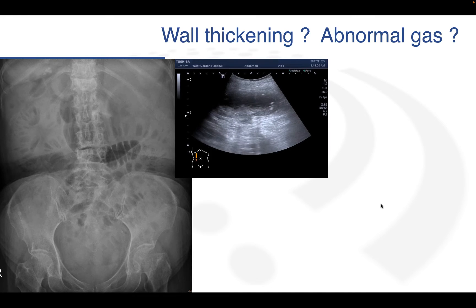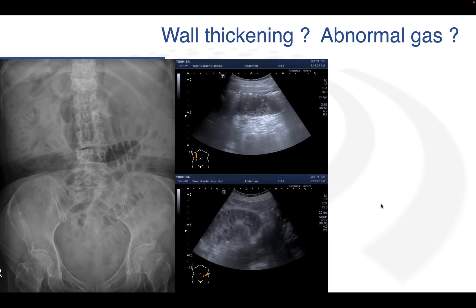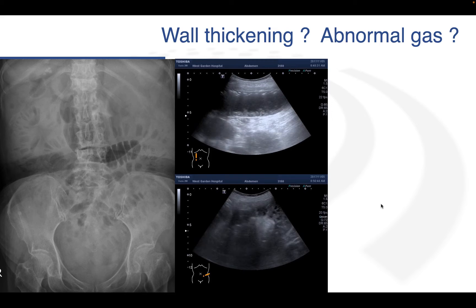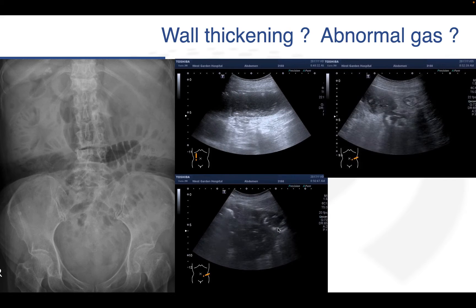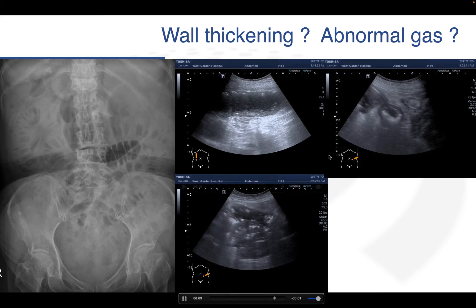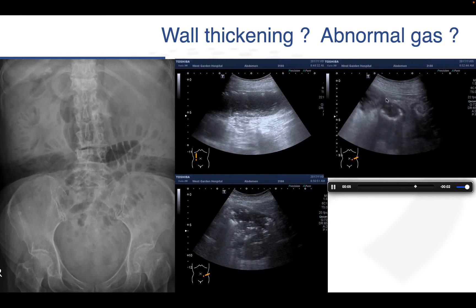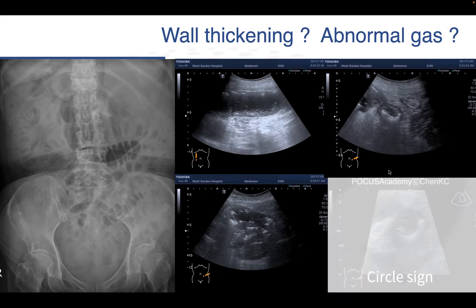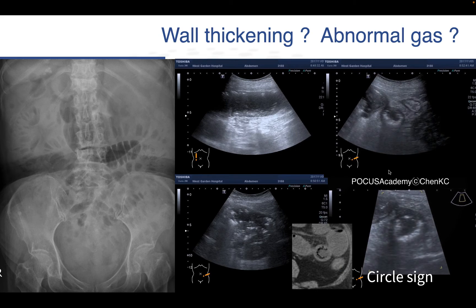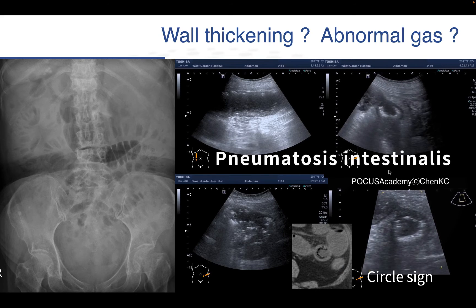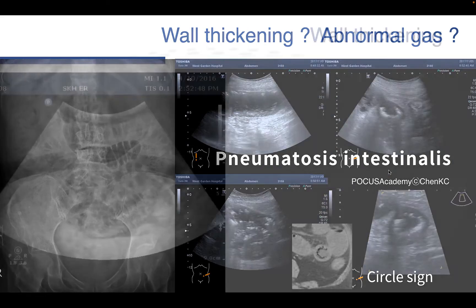We can see these small bowel loops distended. The wall is thickened. When we observe more of the segment, we see some abnormality. We zoom in on the structures and see hyperechoic gas located around the bowel wall. We call it a circle sign. When you encounter patients having a circle sign, it is always abnormal. It's coming from patients having pneumatosis intestinalis.